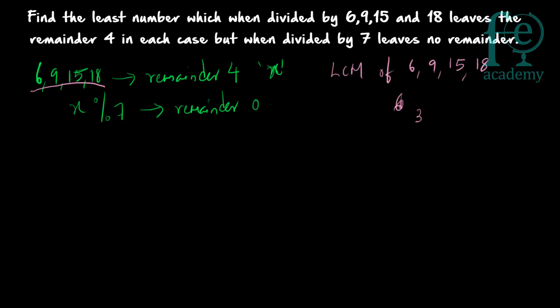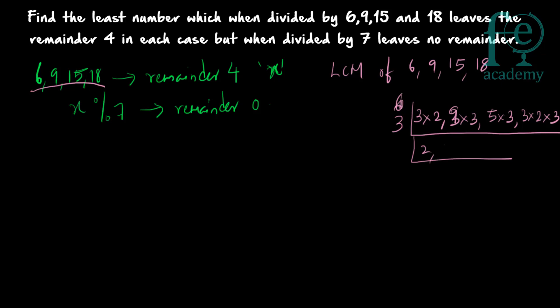To find the LCM: 6 = 3×2, 9 = 3×3, 15 = 5×3, and 18 = 3×2×3. Taking the common factor 3, we get 2, 3, 5, and 6. This simplifies to 5×2×3×3, which gives 5×2 = 10, and 10×9 = 90. So the LCM of 6, 9, 15, and 18 is 90.